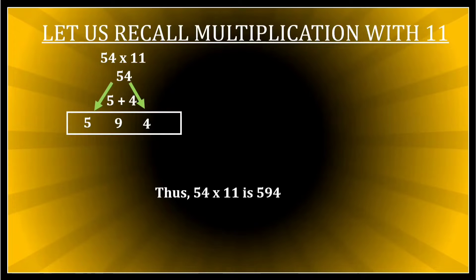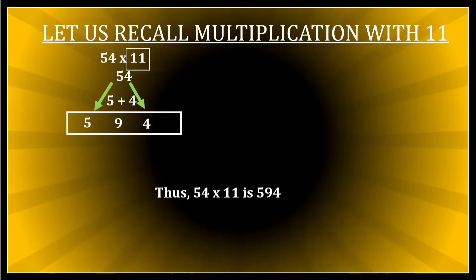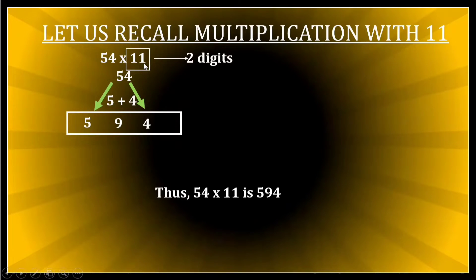Now I'll take this method forward to teach you multiplication by 111, 1111, or any number made of ones. When multiplying by 11, how many digits does 11 have? It has two digits — two ones. If you are multiplying by 111, there would be three digits; by 1111, four digits.